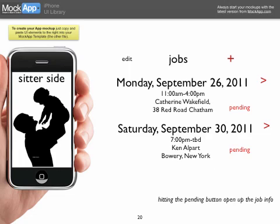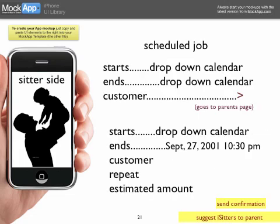From the home menu you can go to Jobs, where all jobs are listed as pending or not pending. Hitting a pending job opens up the job info. The starts and ends are drop-down calendars, which makes sense, but the ones currently out there have problems — for example, if you start on Friday September 27th but today is Wednesday September 22nd, the end date should default to the same day since most people start and end on the same day. Then you pick your customer and it goes to the parents page.